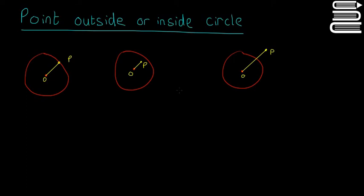We're going to talk quickly about points and if they are inside, outside or on the circle. It's a simple enough concept but a lot of people do get thrown by it when it gets asked, so I'll just make a quick video to cover it. There are three cases: a point can either be on the circle — on the perimeter — it can be inside the circle, or it can be outside the circle.